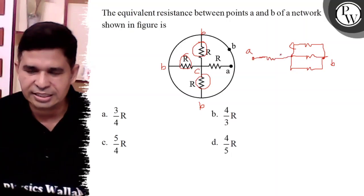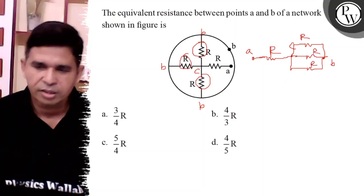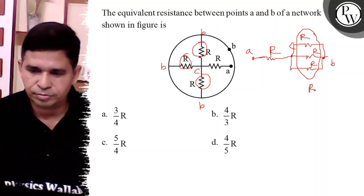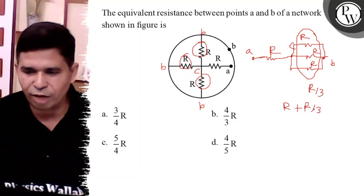One resistance is there. All have the value R. So it is R by three. Therefore, R plus R by three is the final answer.